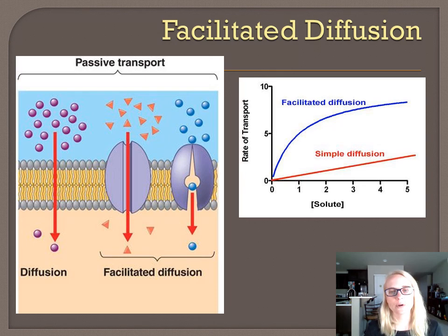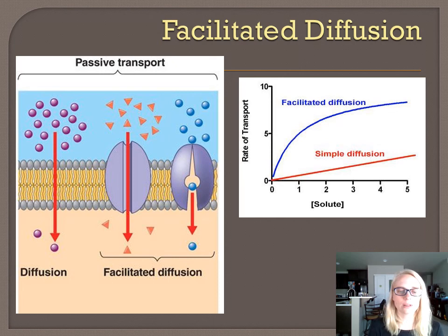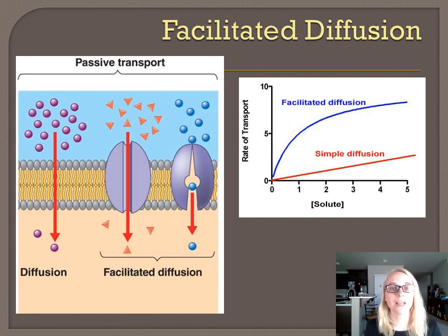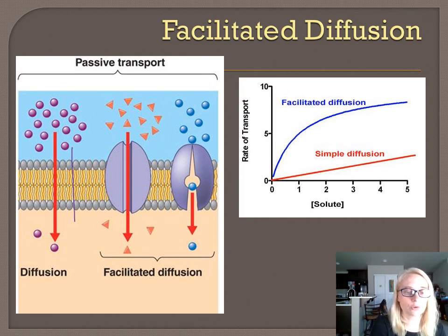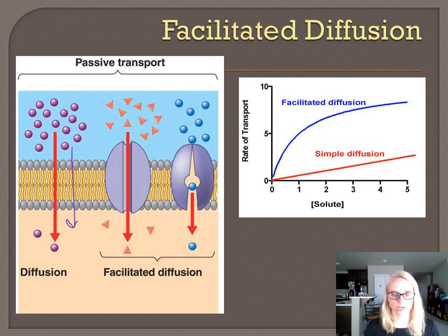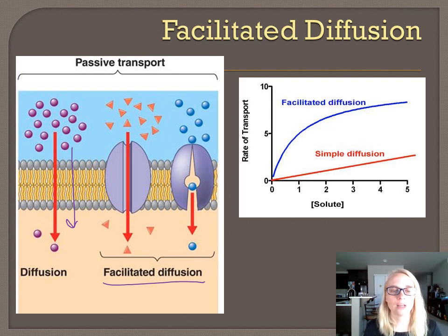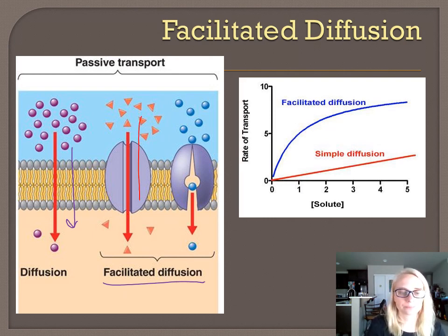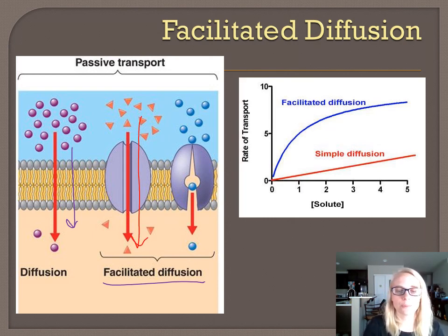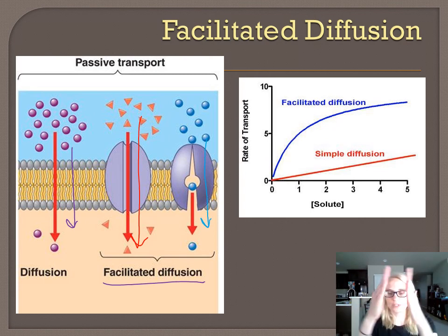To repeat facilitated diffusion: in simple diffusion, molecules like the purple circles are small and nonpolar — lipid soluble — so they go directly through down their concentration gradient. It's still passive transport, from high to low concentration. In facilitated diffusion, a channel protein allows substances to go from high to low through the channel, or a carrier protein that changes shape helps molecules cross from high to low concentration.